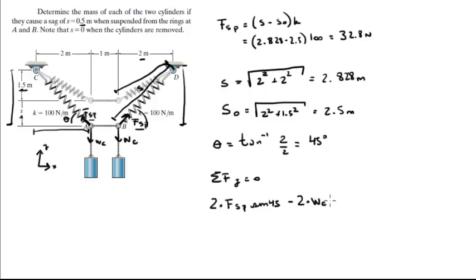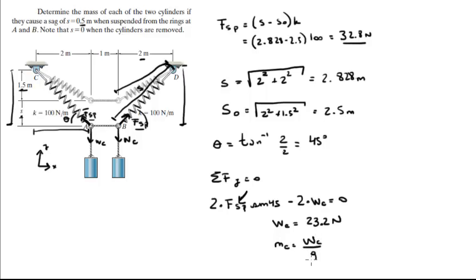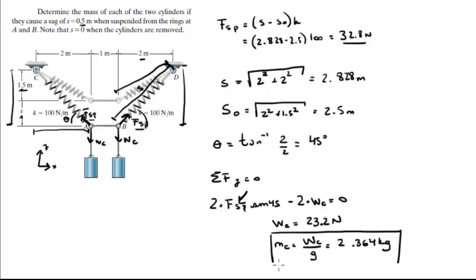2 times the spring force times sine of 45, minus 2 times the weight of the cylinder, equals 0. Solving for the weight of the cylinder using the spring force we already found, we get the weight of the cylinders equals 23.2 newtons. The mass is the weight divided by 9.81 meters per second squared, giving a mass of 2.364 kilograms — the final answer.